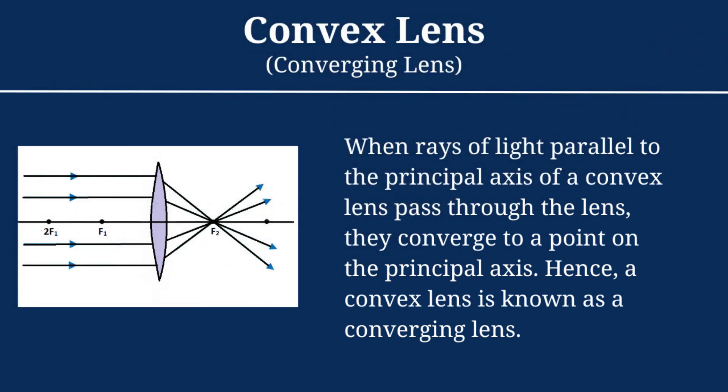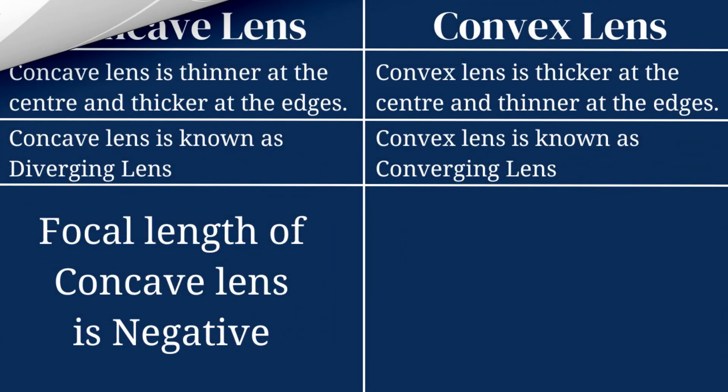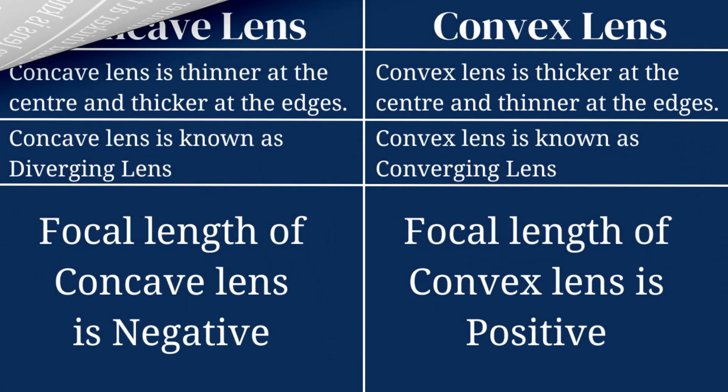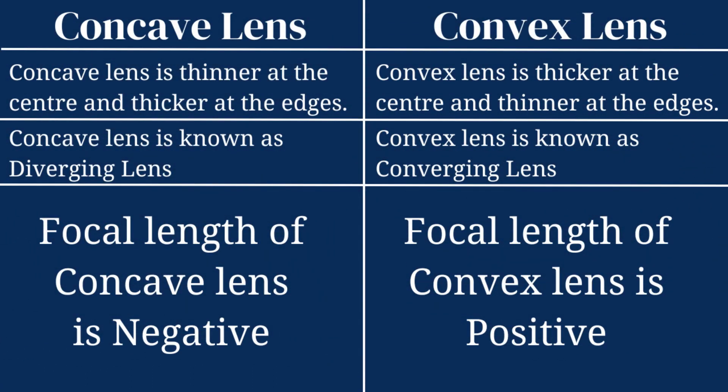In the case of a convex lens, when the ray of light parallel to the principal axis passes through the lens, they converge at a point on the principal axis — hence convex lenses are known as converging lenses. The focal length of a concave lens is negative, and the focal length of a convex lens is positive.